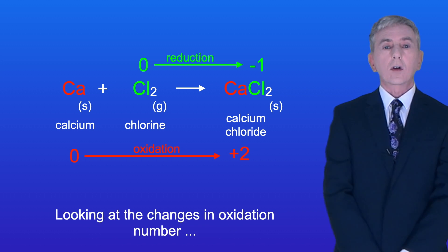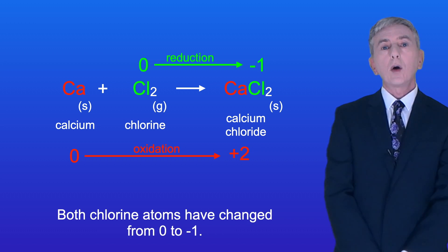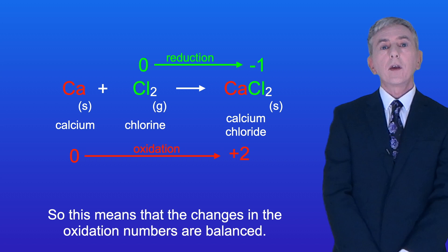Looking at the changes in oxidation number we can see that calcium has changed from 0 to +2 and both chlorine atoms have changed from 0 to -1. So this means that the changes in the oxidation numbers are balanced.